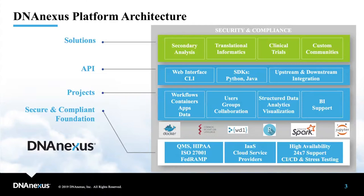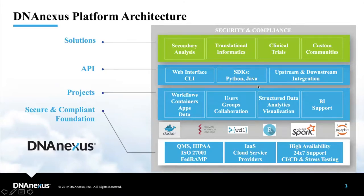The third layer consists of the API. All calls, whether from the web interface or the command line interface, go through a single layer of API. Users who are familiar with developing their own pipelines can also develop applications using the software development kit under the DNA Nexus platform, either in Java or Python. You can develop your own tools and are not restricted to any of the tools provided.